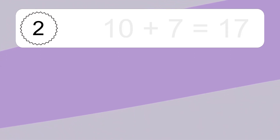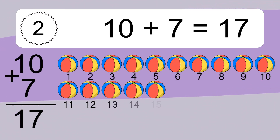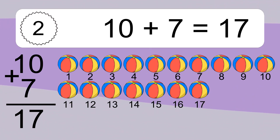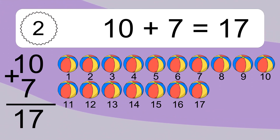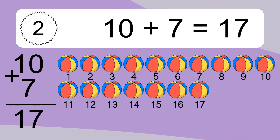10 plus 7 equals what? 10 plus 7 equals 17. Let's count it. 1, 2, 3, 4, 5, 6, 7, 8, 9, 10, 11, 12, 13, 14, 15, 16, 17.